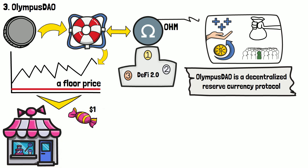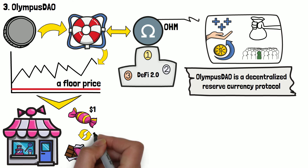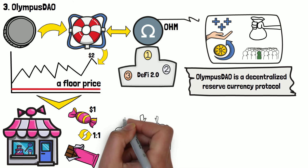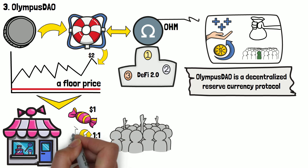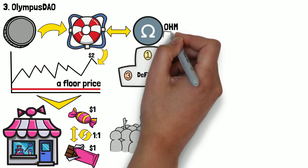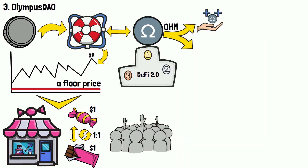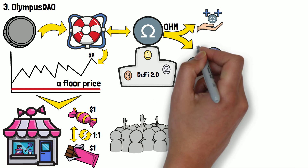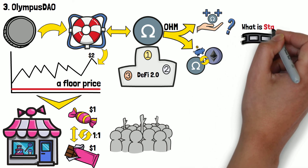The shop owner has backed each candy bar with chocolate bars he has in his warehouse, meaning people will always be able to trade a candy bar for a chocolate bar at a ratio of 1 to 1. The candy bar can become more expensive and cost $2 if there's huge demand for it. However, it can theoretically never go below $1, since this is the value of the chocolate bars in the warehouse — there's another asset backing the price of the candy bars. If you're not familiar with what staking is, make sure to watch the dedicated video on the topic.